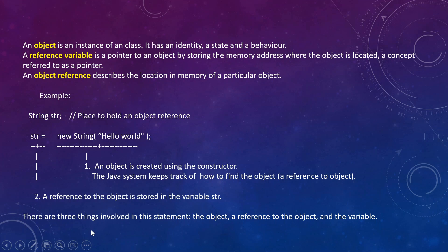There are three things involved in the statement: an object. The moment an object gets created, a reference gets created and gets assigned — the reference is made. That reference is going to be stored in the str variable, which is a reference variable. And why is it called a reference variable? Because it stores the reference. And what is an object reference? An object reference is nothing but the location, an address location.